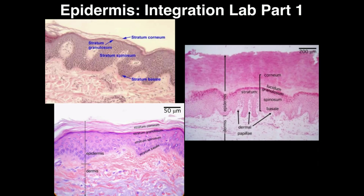Welcome back to Anatomy and Physiology One Laboratory. My name is Kevin Tocoff, and in this video we're going to discuss part one of the integration lab required for this course. We're going to discuss the integumentary system, which consists of the skin, hair, and nails — though we'll neglect hair and nails and focus just on the skin, especially since we don't have an explicit lab over this.